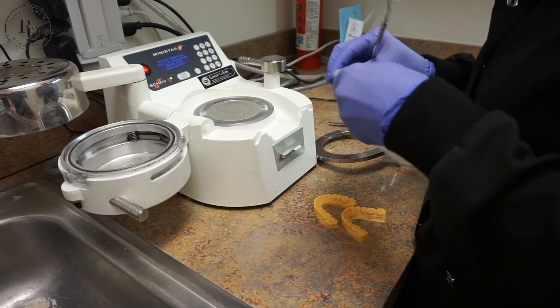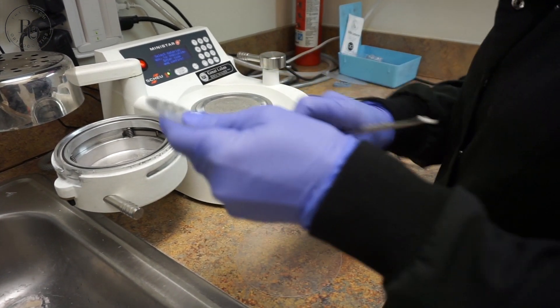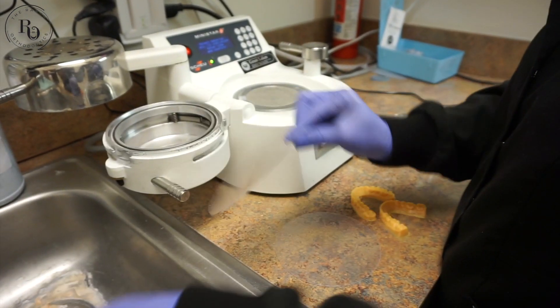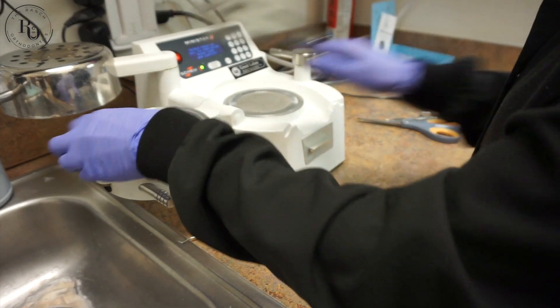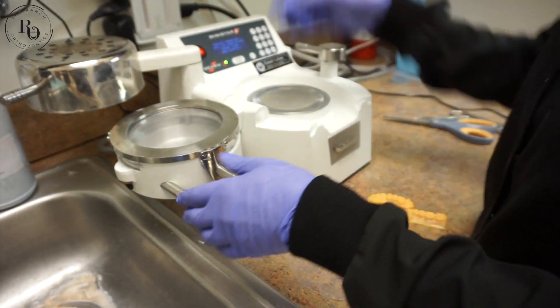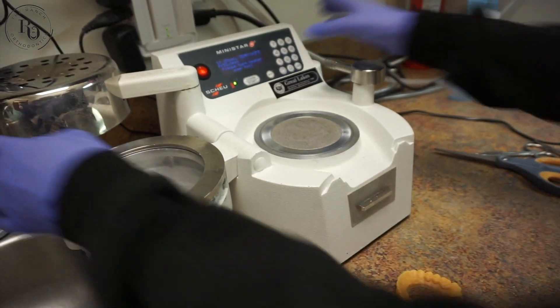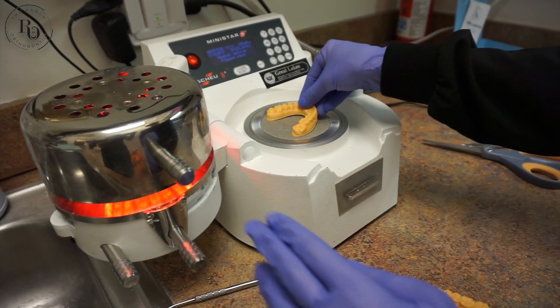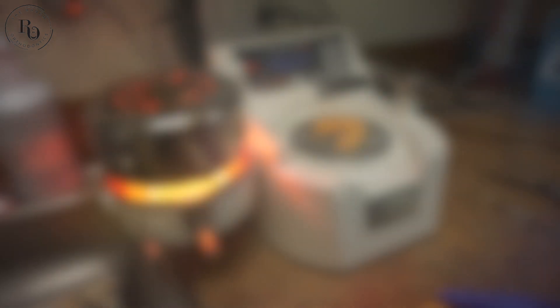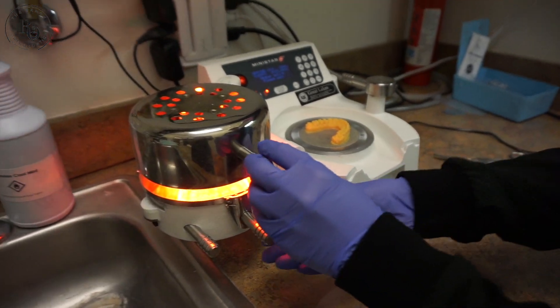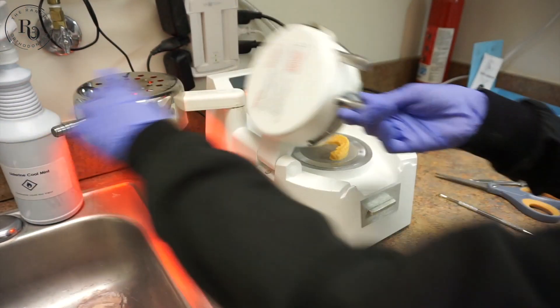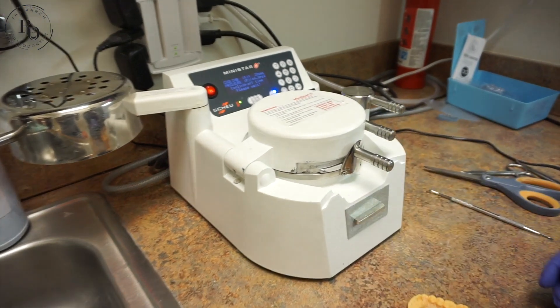Now we are actually making the aligners. We use a vacuum form machine and special material. This material is designed to be tough but also flexible so it will gently guide your teeth to their corrected positions. We're going to put the models on the machine. It heats the material and then we'll vacuum form it to the model.